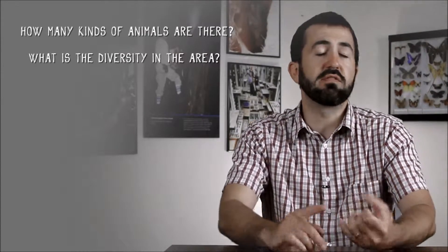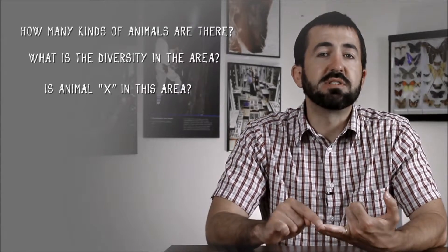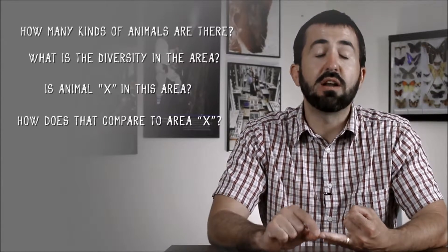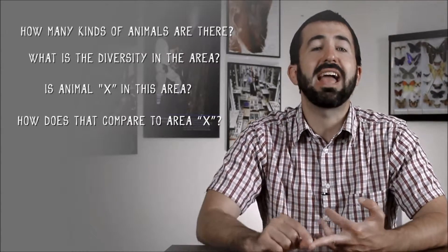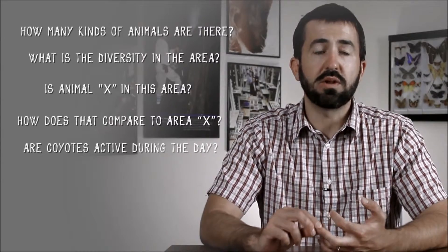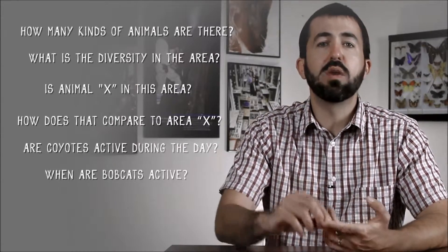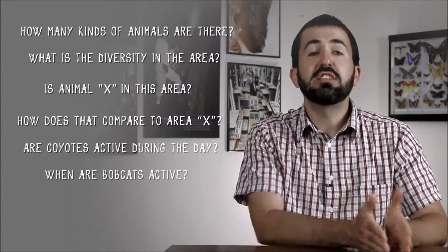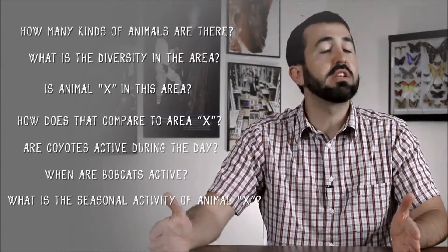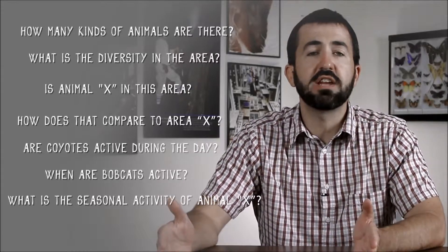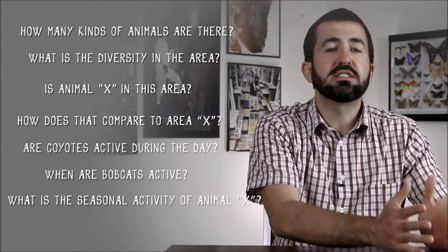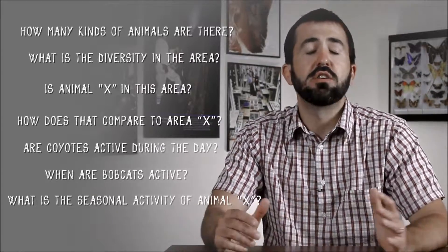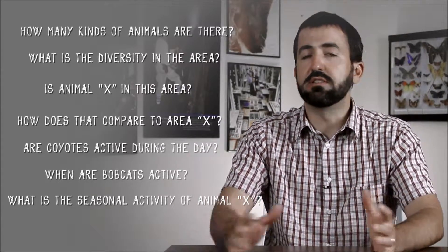We usually compare the diversity of different areas. We can also ask if a specific animal species is in a place — often looking for a certain type of predator or rare species. We can ask about the activity of different species, such as when coyotes, bobcats, or bears are active. We can also ask about seasonal patterns of mammals — if we have cameras out through at least one change of seasons, we can ask if animal activity, presence, or diversity differs among seasons.